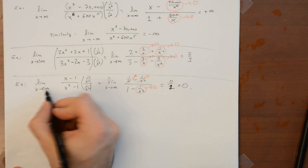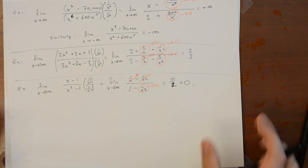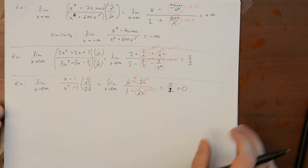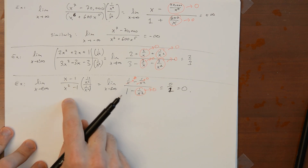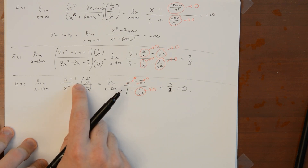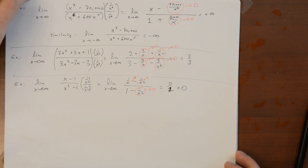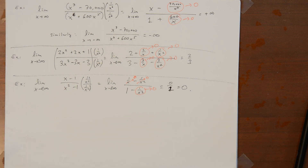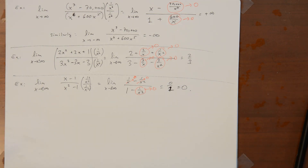The same thing works as x goes to negative infinity. This is what you expect whenever the power of x in the denominator is bigger than the power in the numerator — the denominator grows faster, and the function behaves like 1/x or 1/x² in the limit, and we know those go to 0.